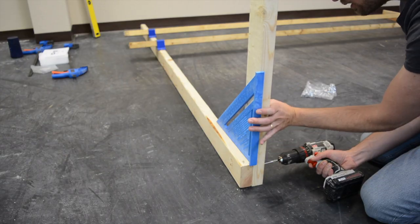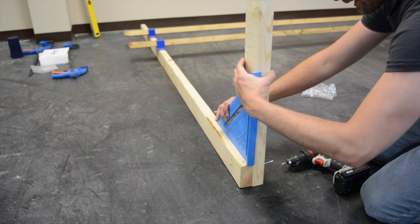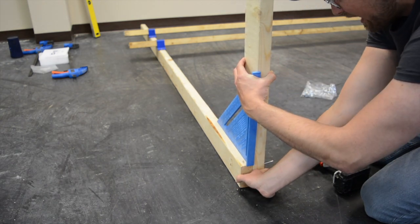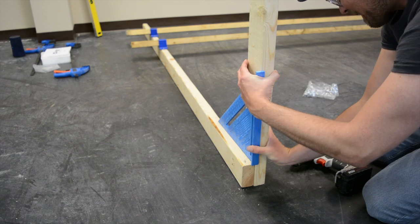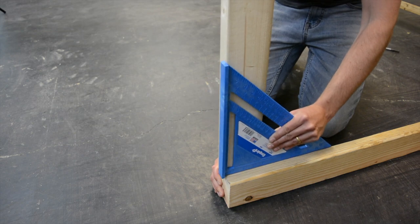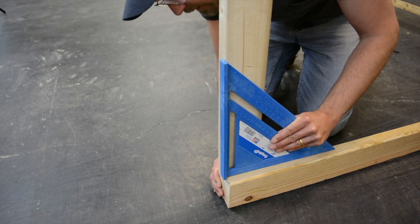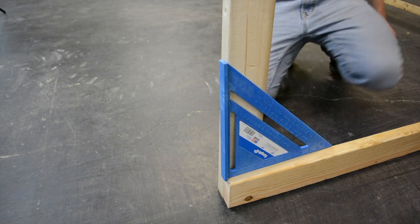Now we're going to attach the horizontal legs. So grab our 2x4x3 foot boards and write back on the ends of each one. Then we're going to align that back end to the inside of our vertical frame legs at a 90 degree angle. So it's going to be flush with the bottom at a 90 degree angle on the inside.